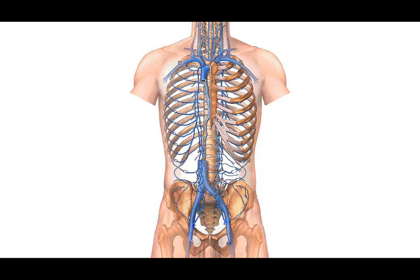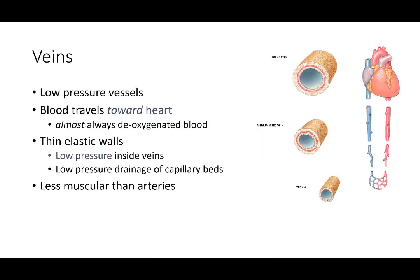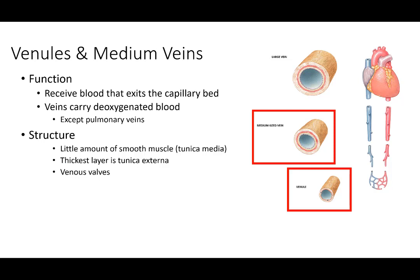The venous system includes the vena cava — large vessels bringing blood back to the right atrium. Veins are low pressure, bringing blood away from the capillaries back to the right atrium. They have all three layers — tunica externa, tunica media, and tunica intima — but because of low pressure, the wall is much thinner than on the artery side. Medium-sized veins and tiny venules bring mostly deoxygenated blood away from the capillary beds.